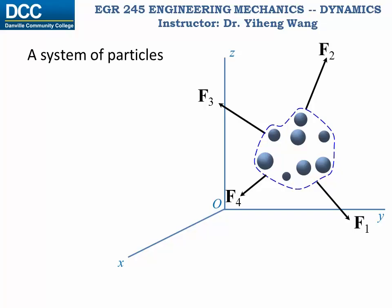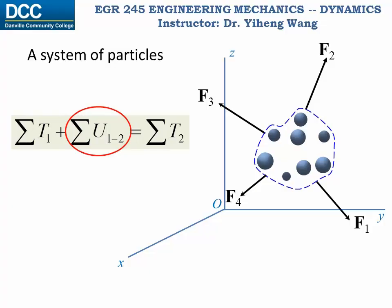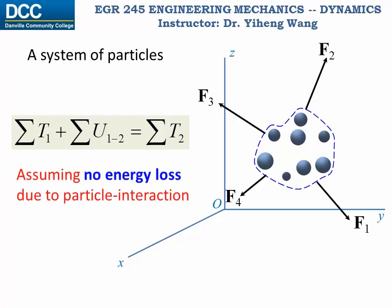The principle of work and energy can also be applied to a system of particles. In the equation, the first term is the total kinetic energy of all particles in the system at the initial state, the middle term is the total work done to the system by all external forces during the process, and the last term is the total kinetic energy at the final state. When using this equation, keep in mind that we assume there is no energy loss due to particle interaction — for example, if particles collide with each other, there will be energy loss as heat or sound, and the equation will not apply.